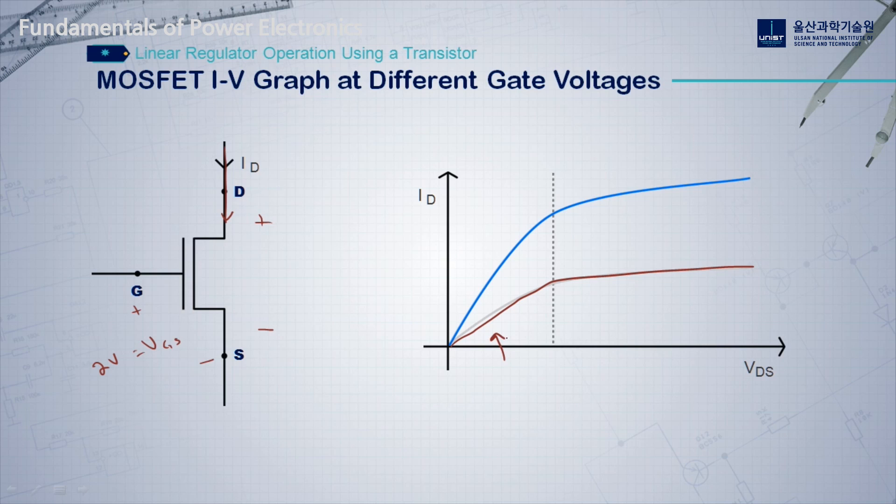And, here again, this is the linear region, we can see our system acts like a resistor. But, this time, if we look at the difference, we have two different angles here. One, before it was a very steep angle, and now, at a lower gate voltage, we have a lower angle here. So, these are like two different valued resistors.